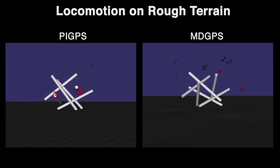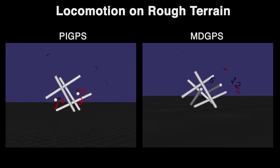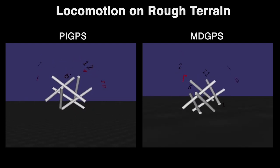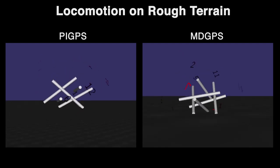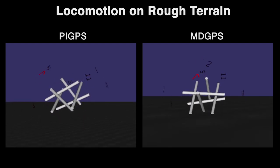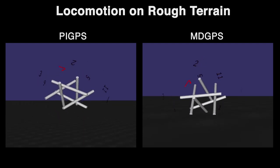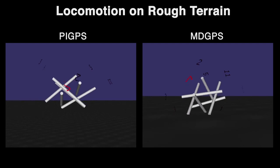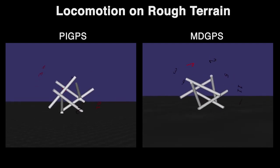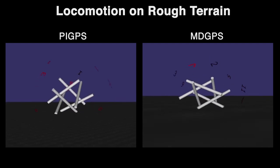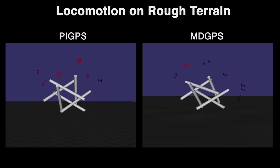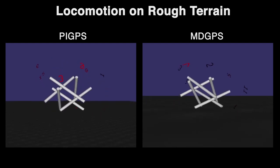In addressing the issue of rough terrain, we found that the discontinuous nature of the dynamics over an inconsistent surface rendered MD GPS ineffective. To solve this, we implemented path-integral guided policy search, PI GPS, in simulation, which can be seen to perform much better than MD GPS under these circumstances.